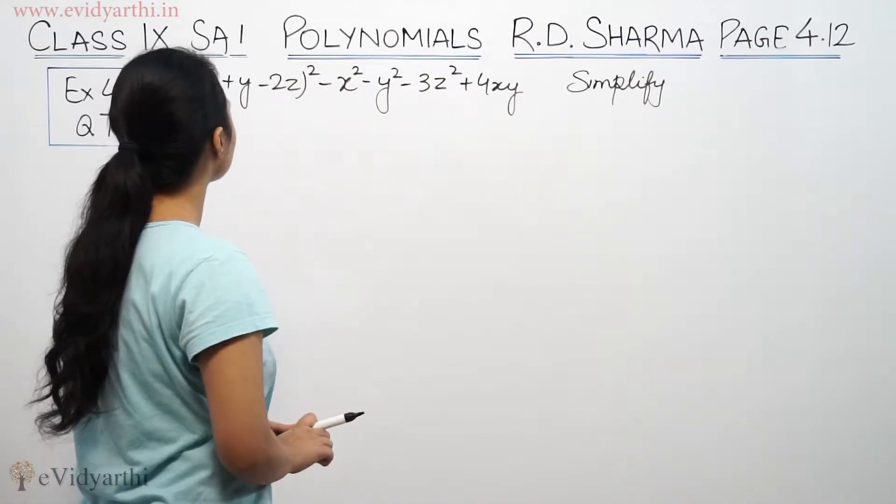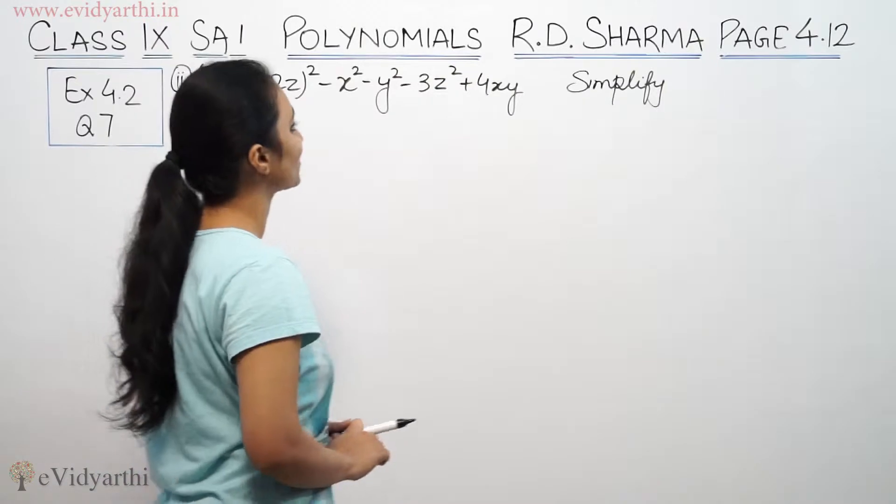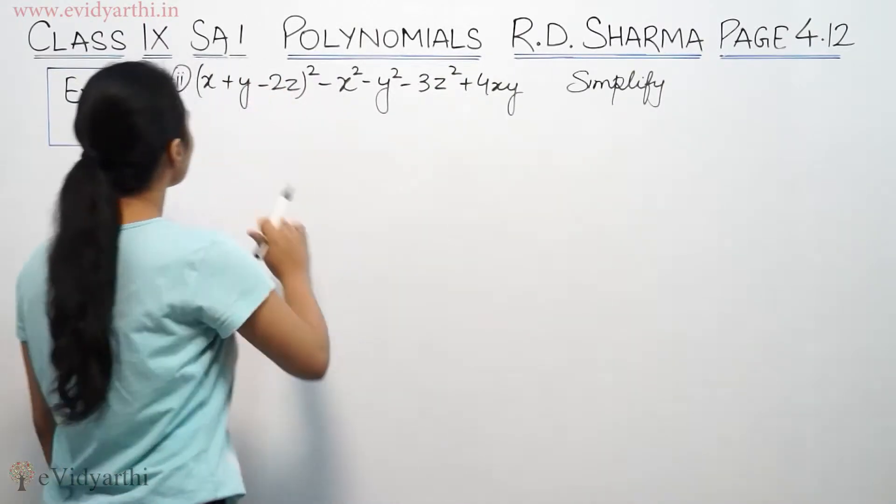This says simplify (x+y-2z)² - x² - y² - 3z² + 4xy.